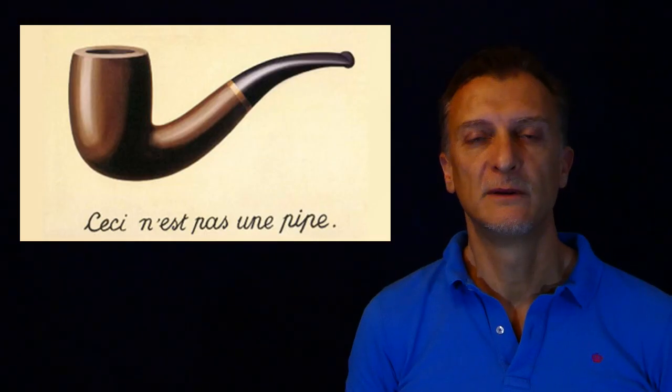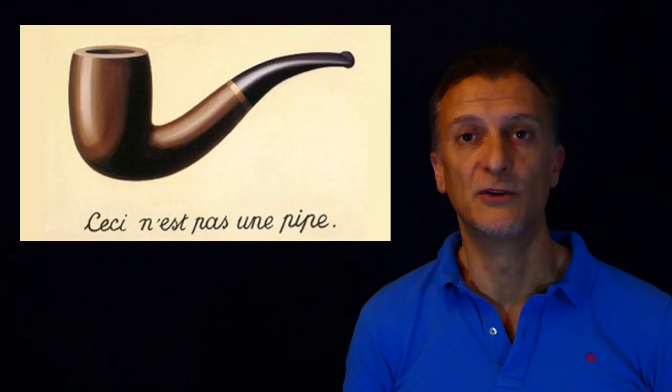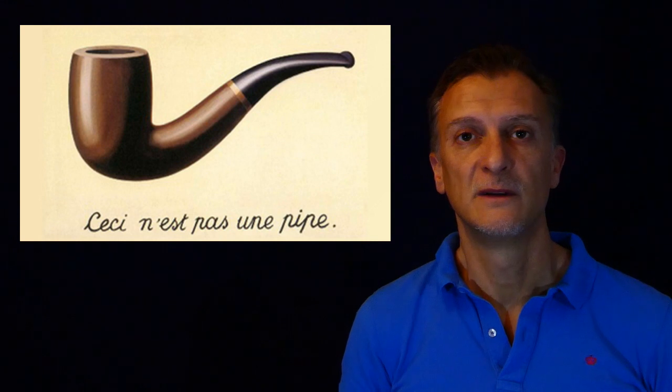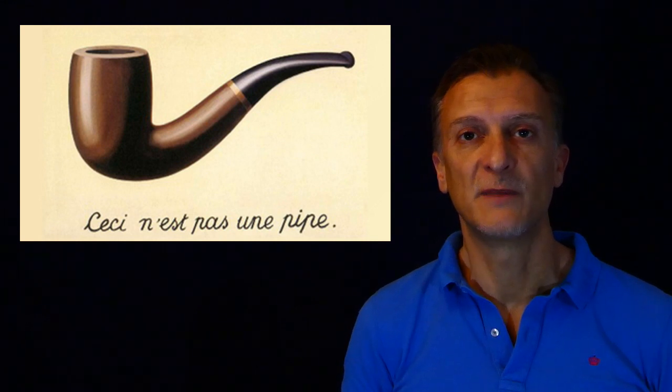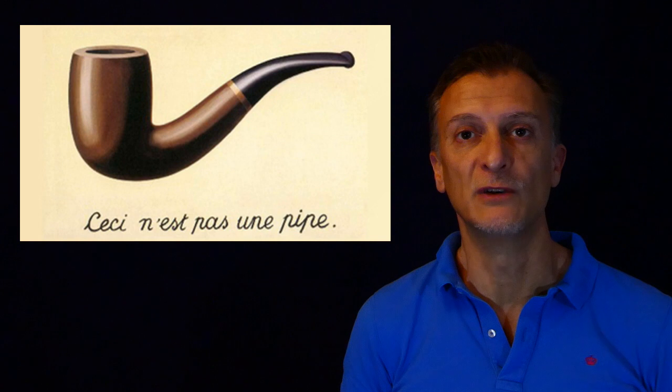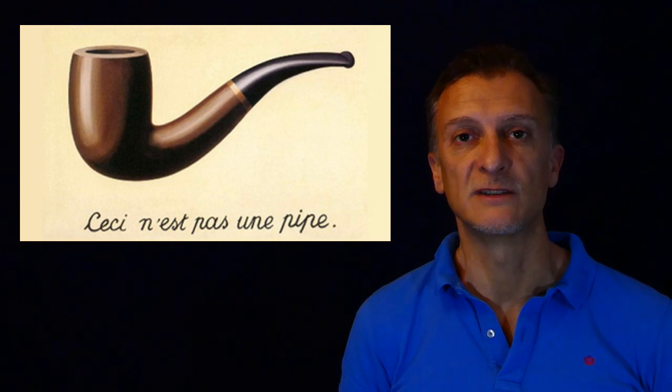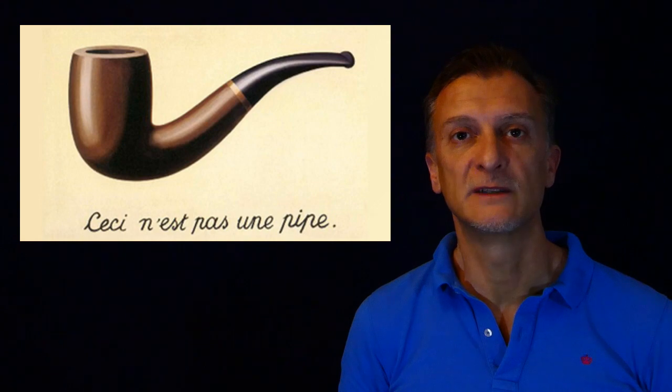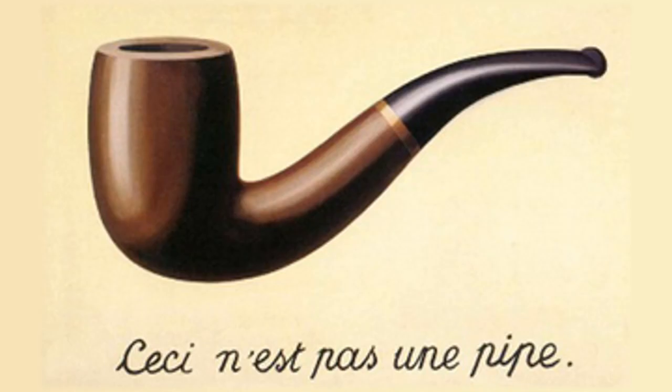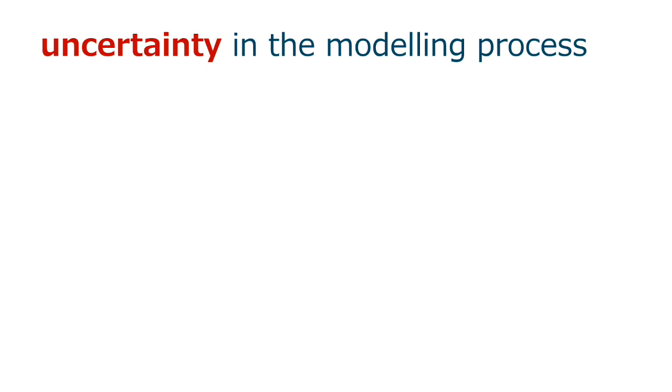Ceci n'est pas une pipe. This is not a pipe, but the drawing of a pipe. In this famous painting, Magritte highlights the difference between the real thing and its representations. A model is always a representation of the real plant, not the real plant. Even when we have a good nonlinear model for all operational regions, we still have to deal with uncertainty in the modeling process.